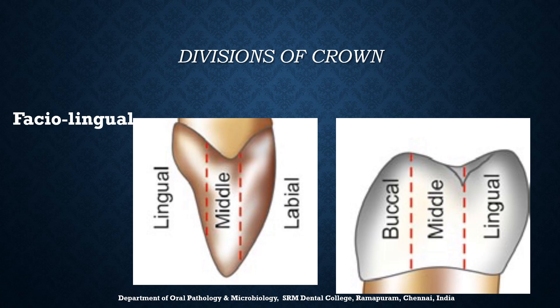For the proximal surface viewed faciolingually, the crowns of anterior teeth can be divided into labial third, middle third, and lingual third. Whereas the crown of posterior teeth can be divided into buccal third, middle third, and lingual third.